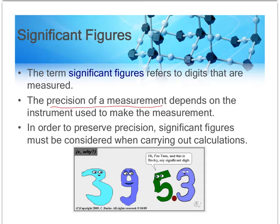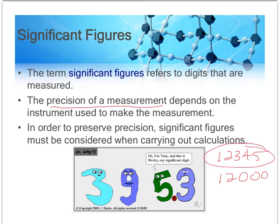If you see one number with a lot of significant figures and then another number with fewer significant digits, that would mean the number with more significant digits was measured with a more precise piece of equipment. That's important to scientists — they want to know how much they can rely on a value, and significant figures tells them.